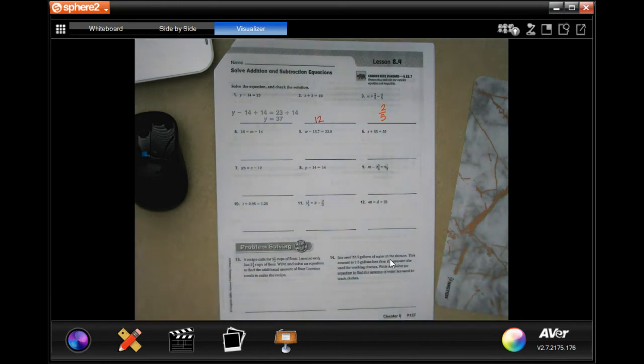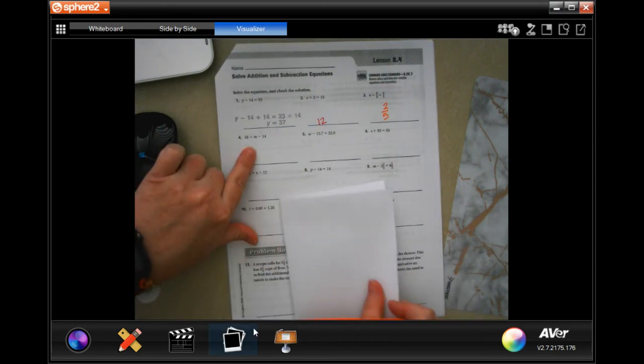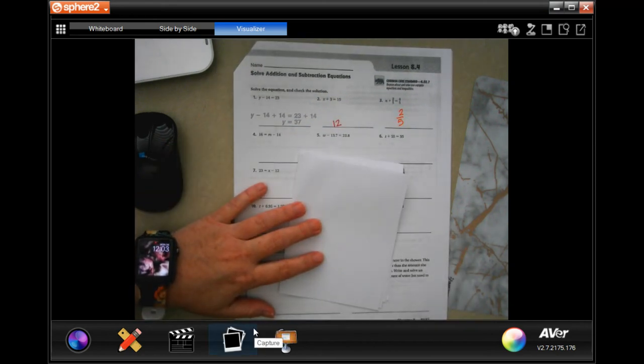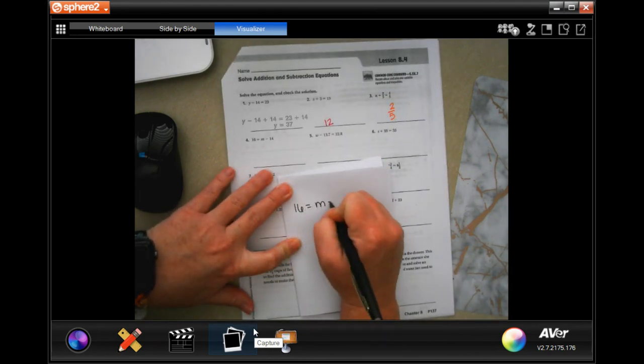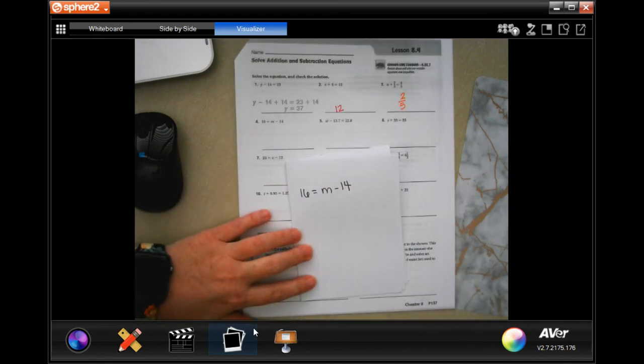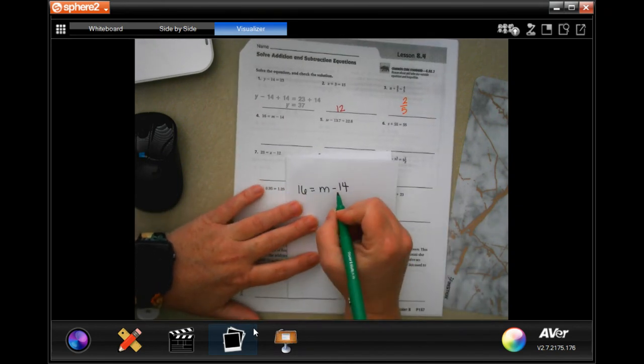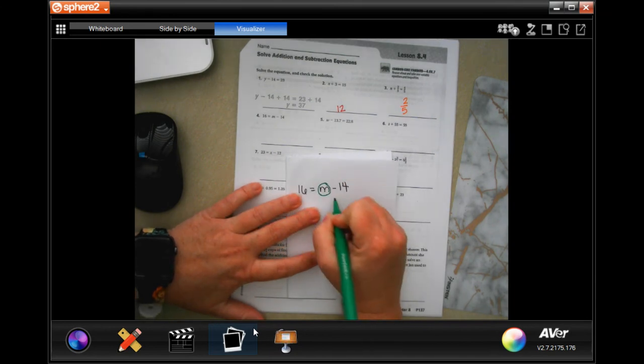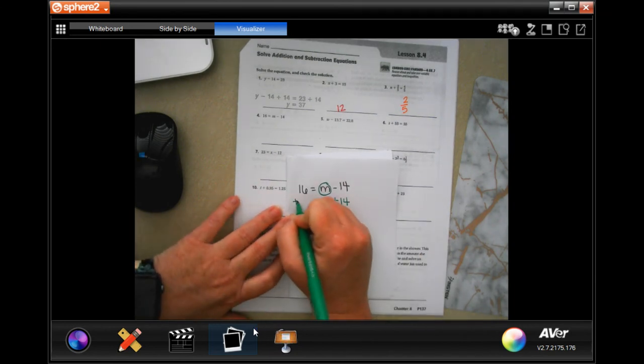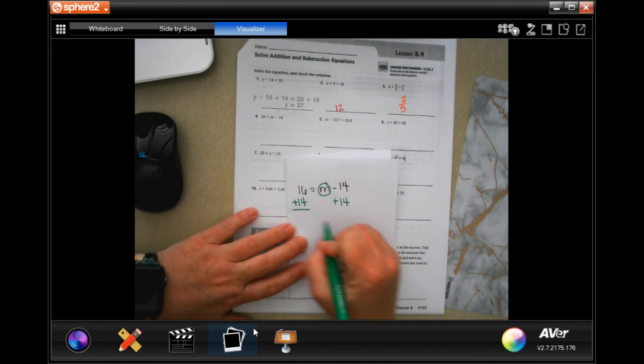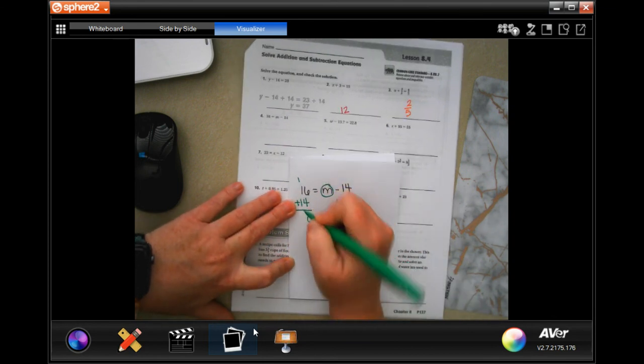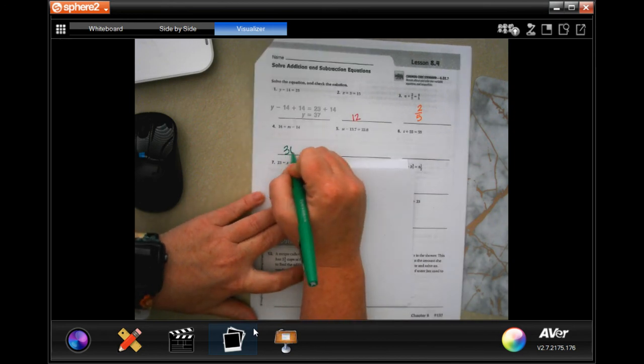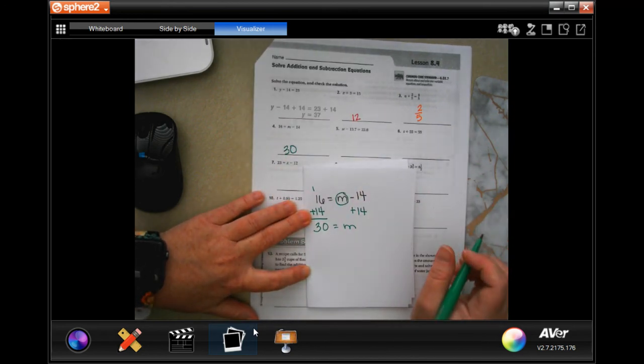They're going to try and throw you off a little bit by mixing these up so that you have your number on this side with the equal sign and then the actual problem on the other side. It's the same thing, guys. Don't freak out. I need to get m alone, so I need to add 14, which means I need to add 14 over here. That means 6 plus 4 is 10, carry that 1, 1 plus 1 plus 1 is 3, equals m, which means 30. You guys totally got this.